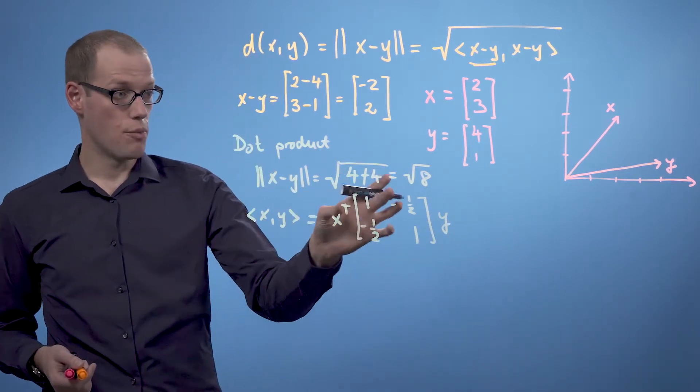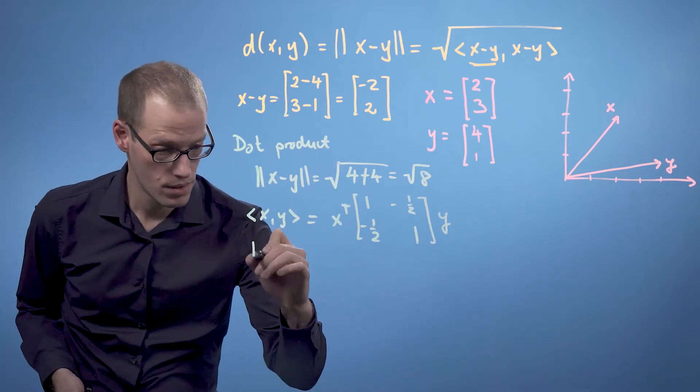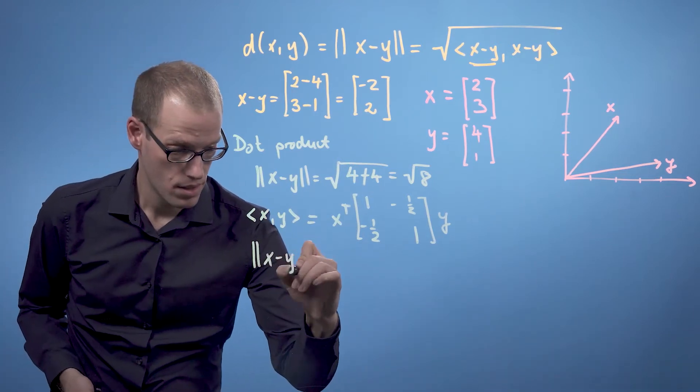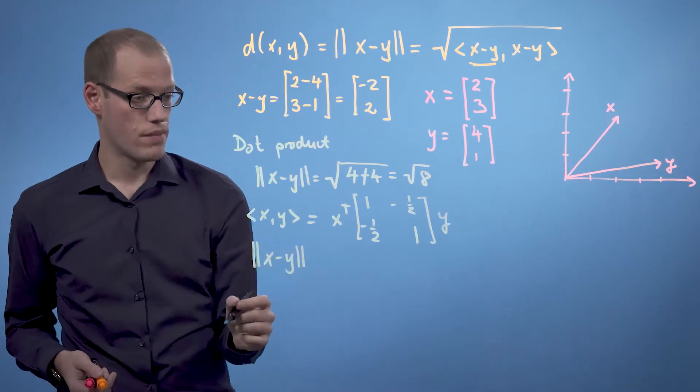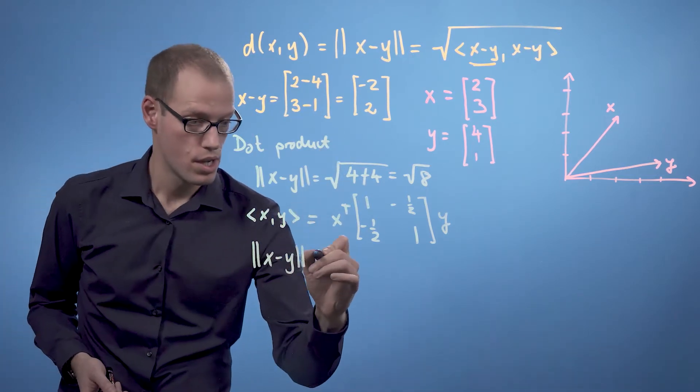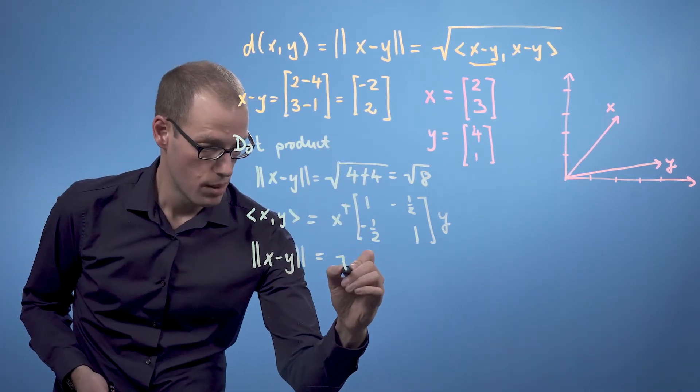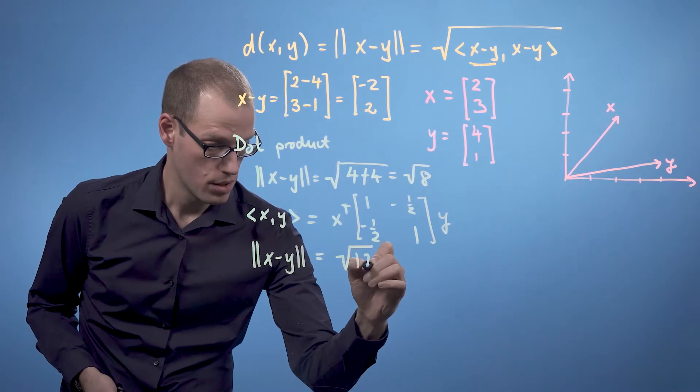Then if we use the difference vector here, the result will be the square root of 12.